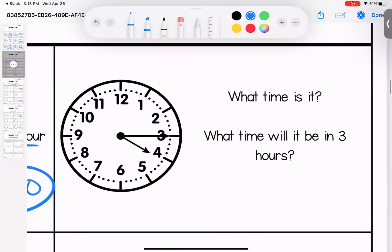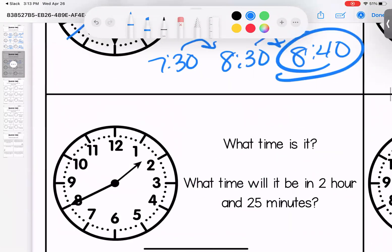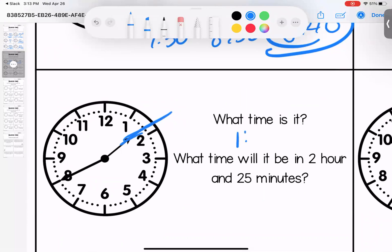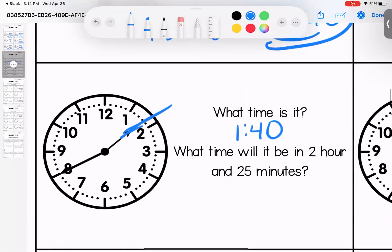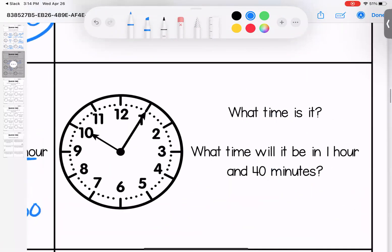What time is it? It's 4:15. What time will it be in 3 hours? 7:15, 4 plus 3 is 7. What time is it? It is 1:40. What time will it be in 2 hours and 25 minutes? Well 1:40 plus 2 hours is 3:40, 3:50, 4 o'clock, and then we need 5 more minutes, 4:05.